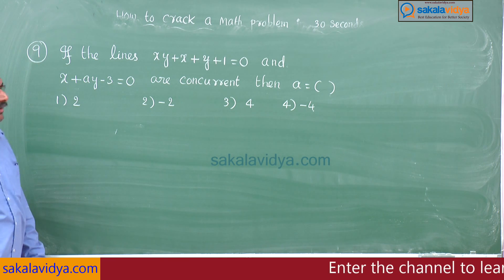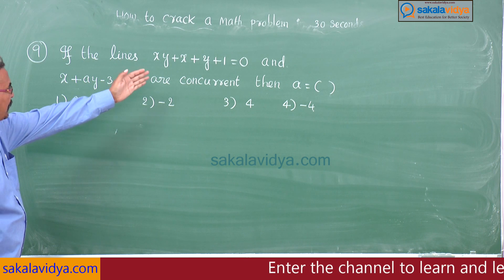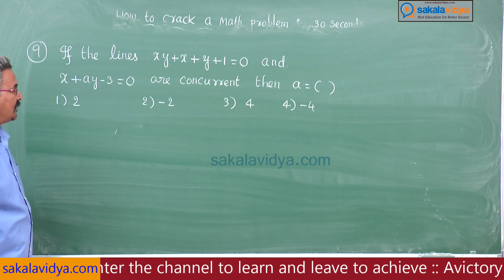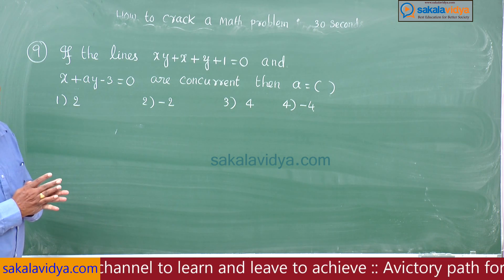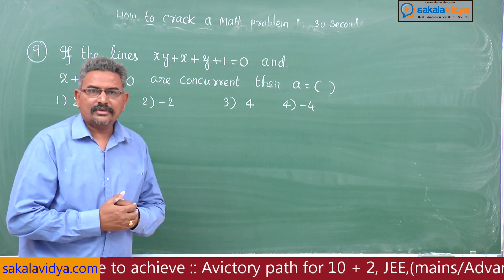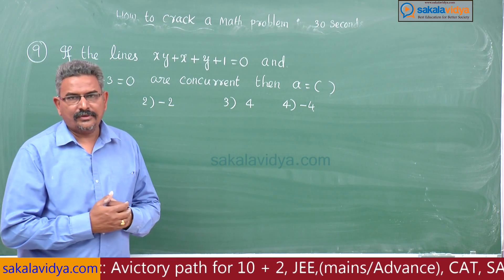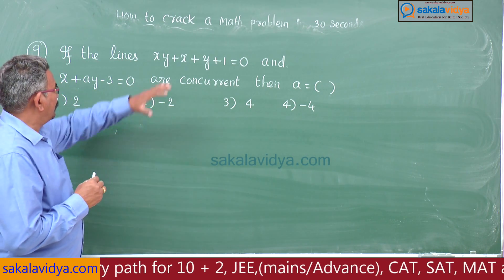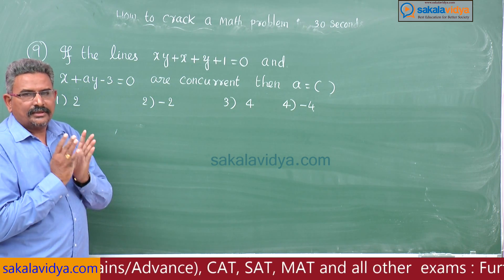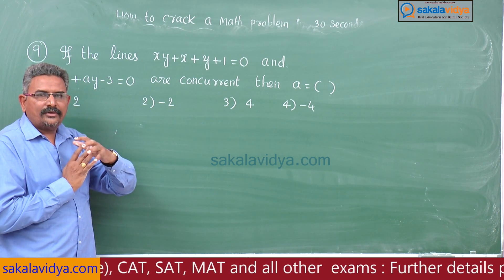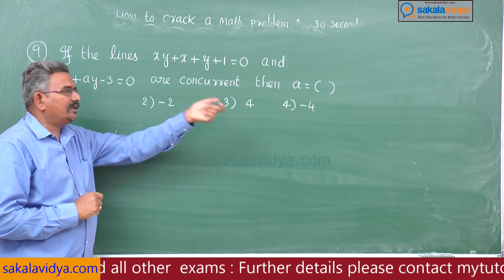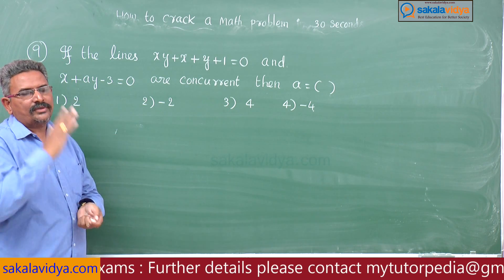Ninth problem: if the lines xy + x + y + 1 = 0 and x + ay - 3 = 0 are concurrent, then a is equal to: first option 2, second option -2, third option 4, fourth option -4. The first equation represents a pair of lines, meaning two lines, and these three lines are concurrent. The strategy is to find the point of intersection of the pair of lines and substitute it into the third line to get the value of a.